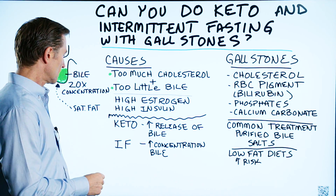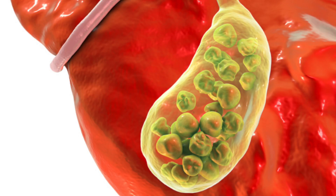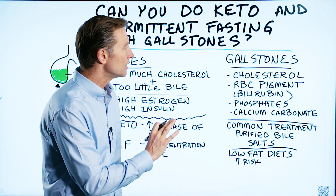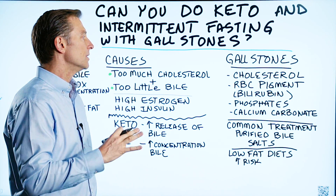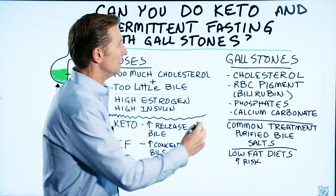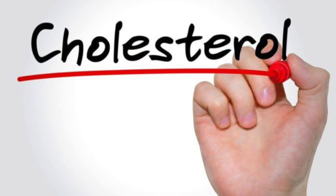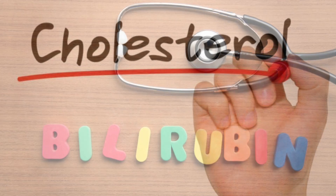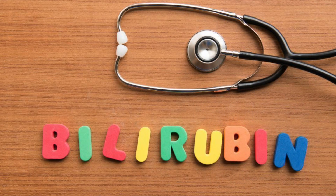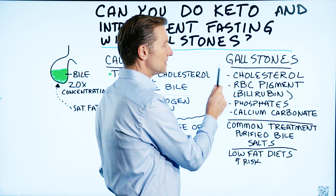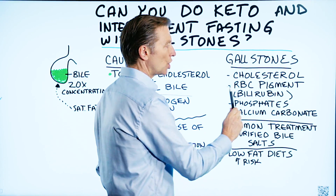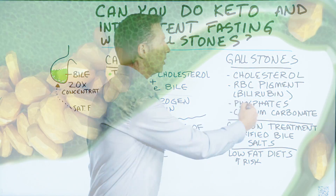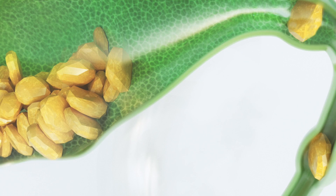The first question is, what is a gallstone made of? There are several different types of gallstones, but the most common is the cholesterol gallstone. But all of them have several ingredients in common. They contain some cholesterol, some bilirubin — which is a pigment and a byproduct from red blood cells — and they have phosphates and calcium carbonate. So that's what makes up a gallstone.